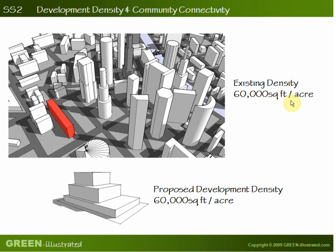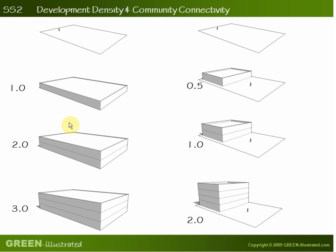Let's start with the first path of compliance: development density. You must achieve two things. First, the existing density should be higher than 60,000 square feet per acre. Second, the proposed building should also have a density higher than 60,000 square feet per acre. Here is a simple explanation of the concept of density. Let's say the site is 10,000 square feet. If we build one story over the entire site with no setbacks, we are building 10,000 square feet of space. Since density is building area over site area, 10,000 over 10,000 equals one — a density of one.